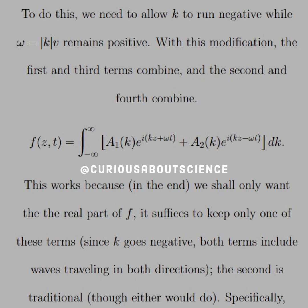This works because in the end we shall only want the real part of f. It suffices to keep only one of these terms since k goes negative. Both terms include waves traveling in both directions because of the way that complex exponential works into sine and cosine. The second is traditional, though either would do.